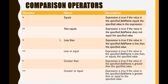Less than: the expression is true if the value in the field name is less than the specified value. Less than or equal to: the value has to be either less than the specified value or equal to the specified value. Greater than or equal to: the value should either be greater than the specified value or the field name value should be equal to the specified value.